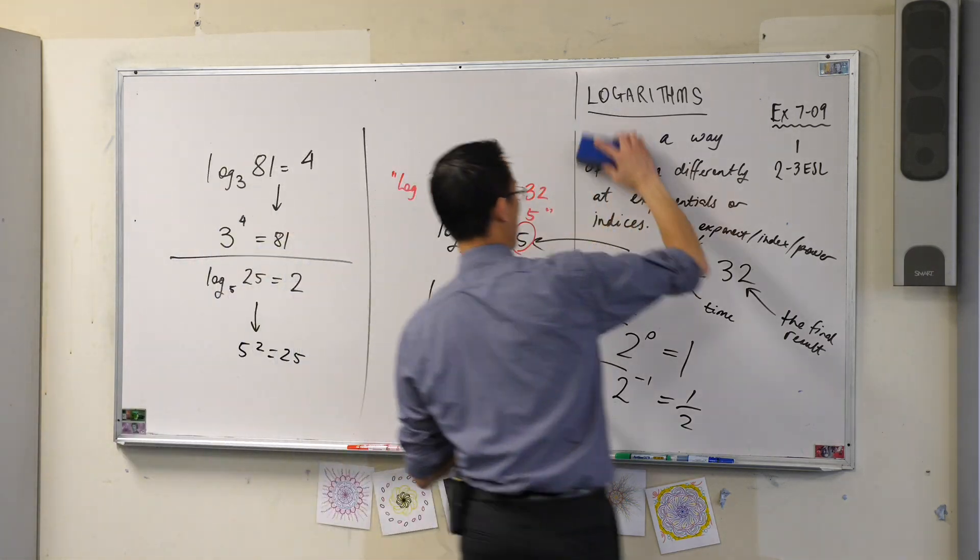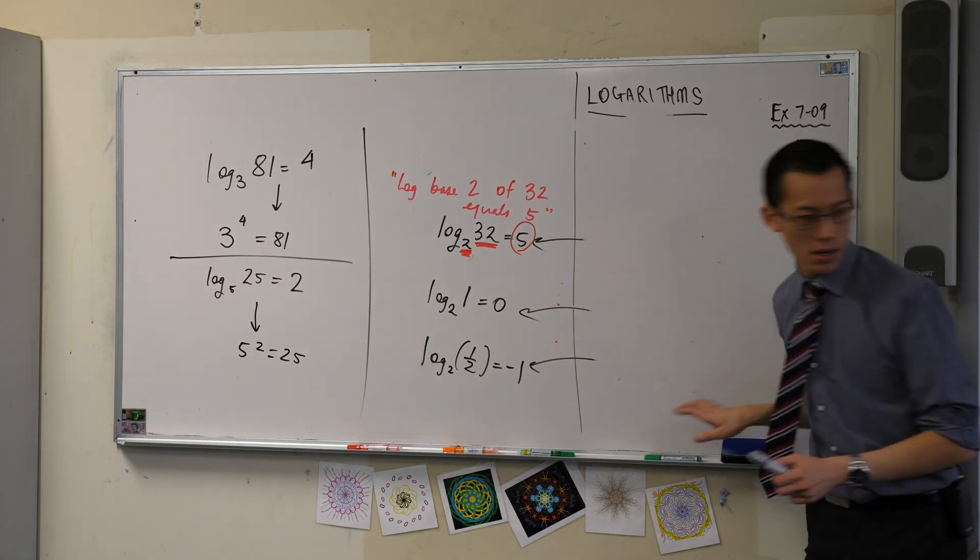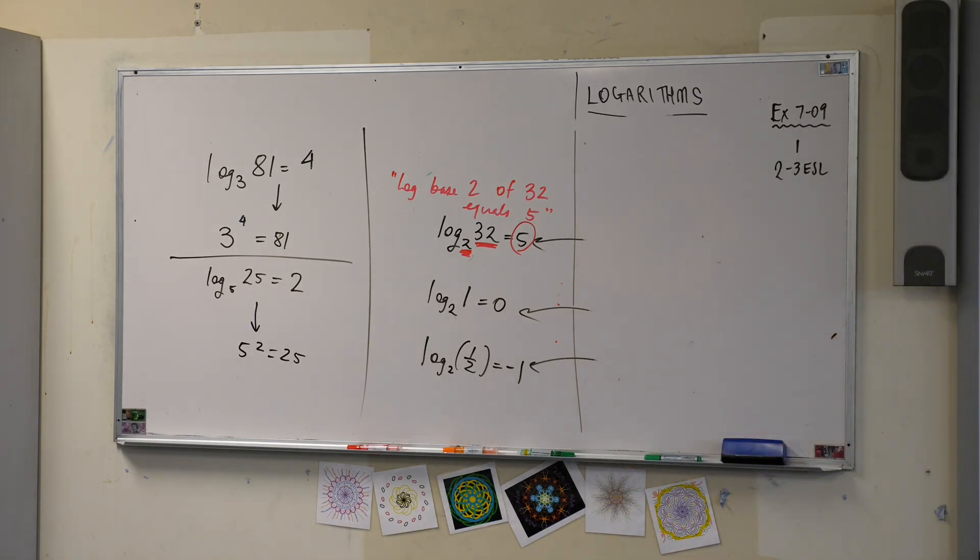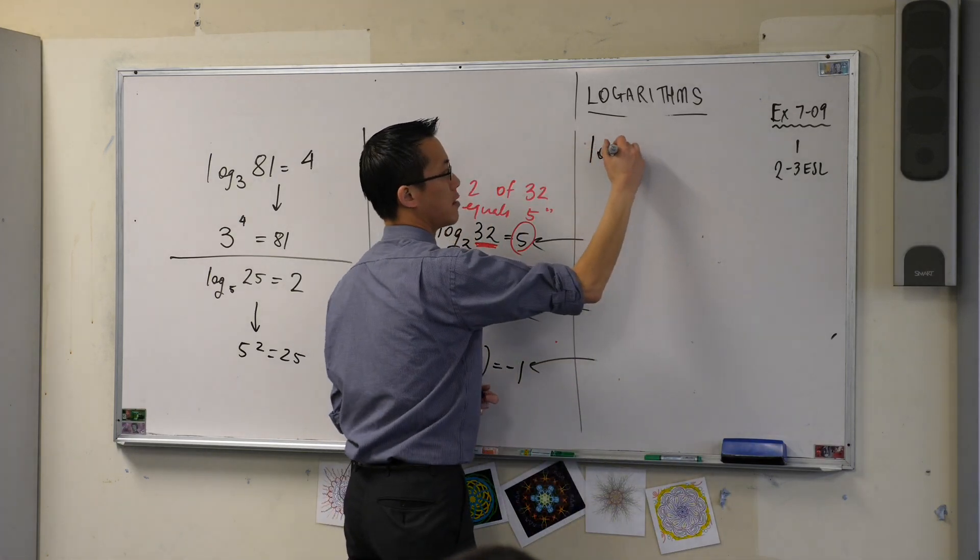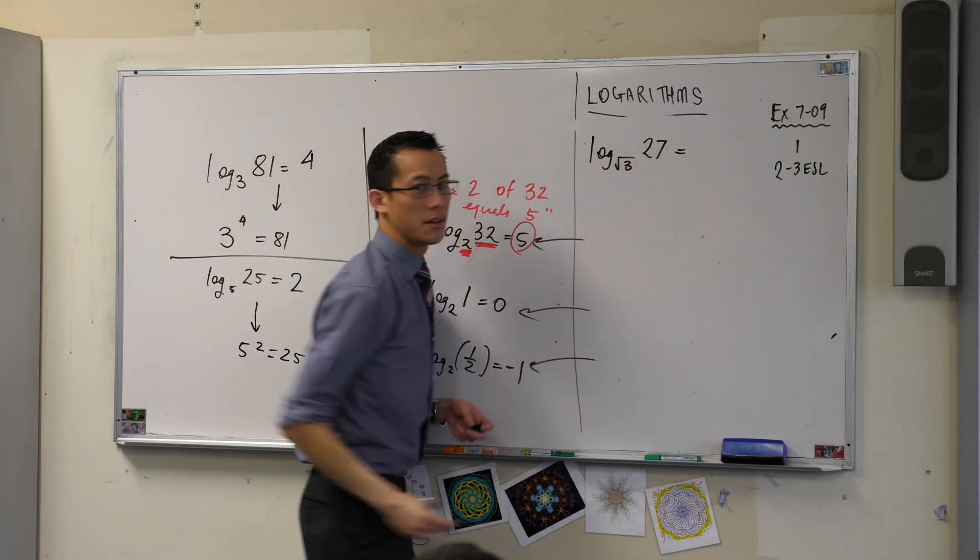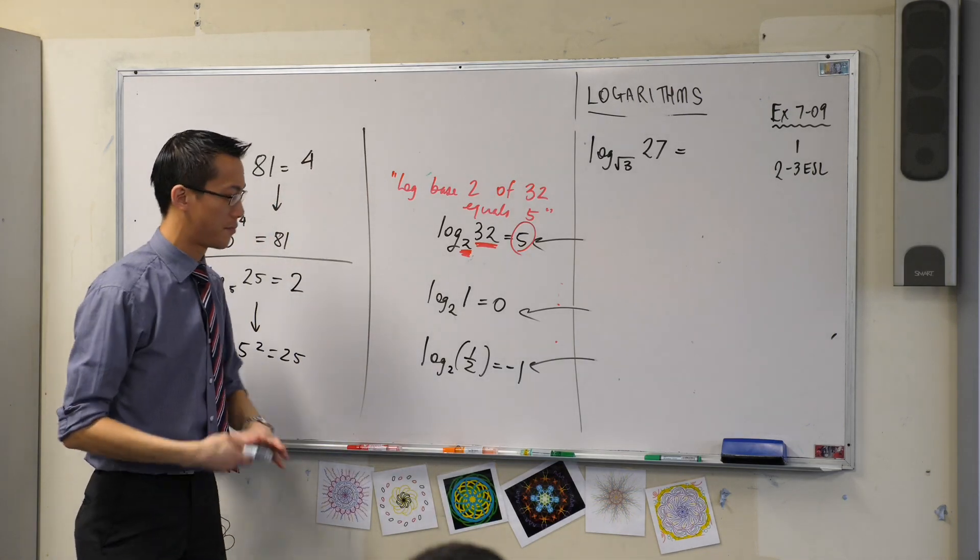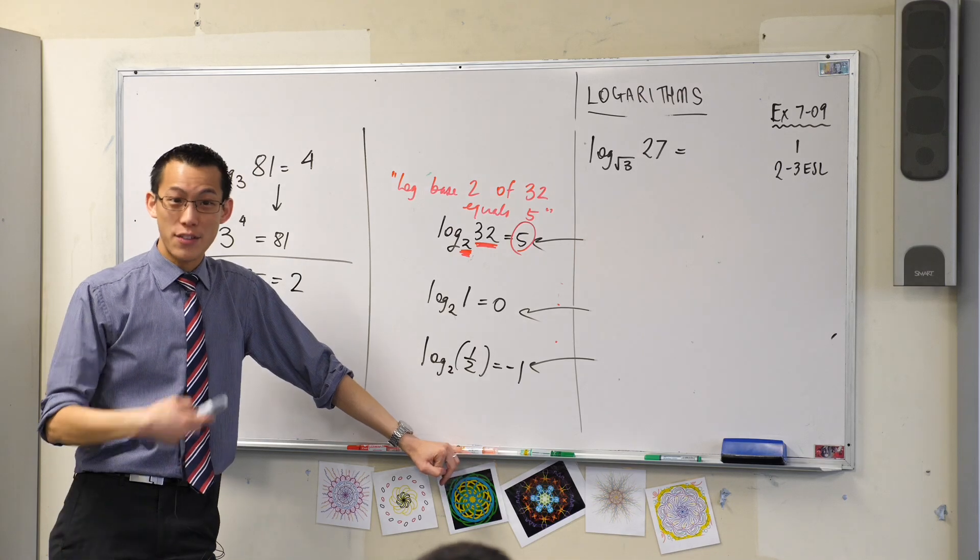Alright, how about, I'm gonna go over here. Whoopsie-daisy. I'm gonna pick one of the ones that they've given us. Oh, this is a bit of a, this is a hard one. Okay, this is more challenging.